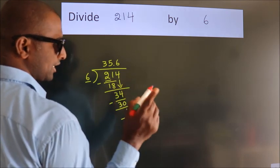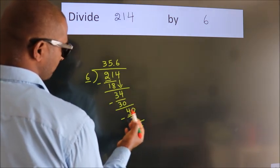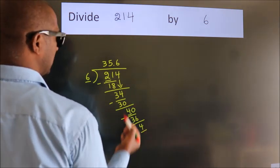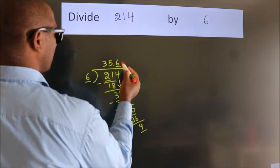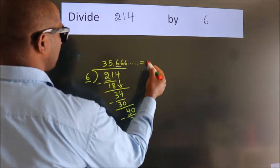Now you observe. We had 4 here, and we got 4 again. That means this number keeps on repeating. So this is our quotient, done.